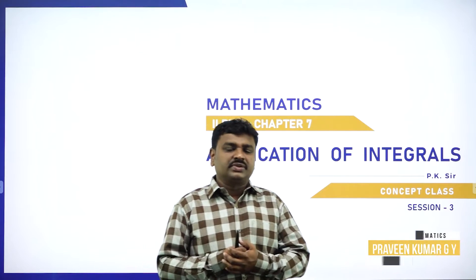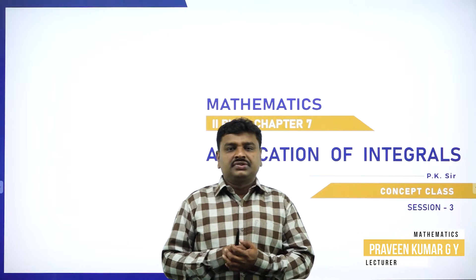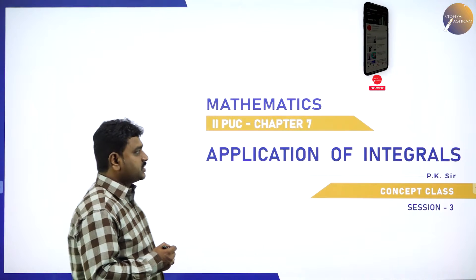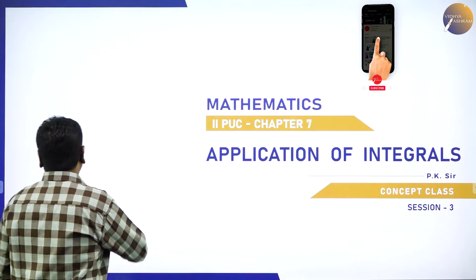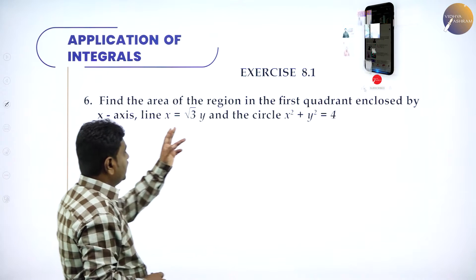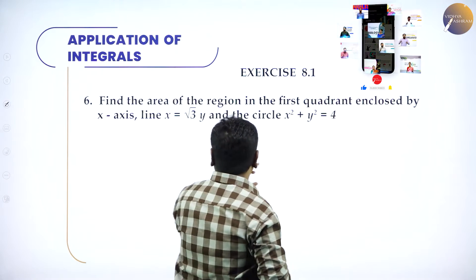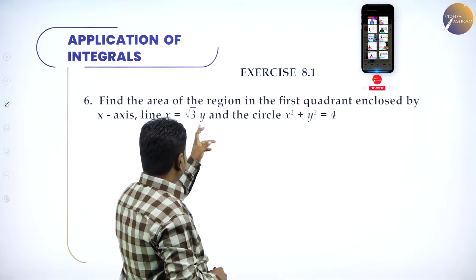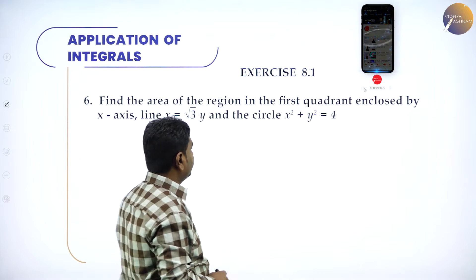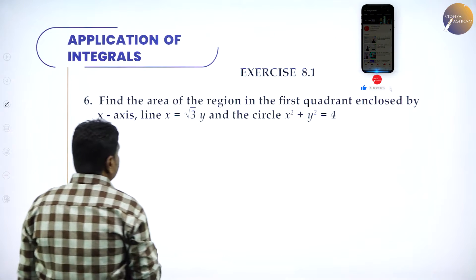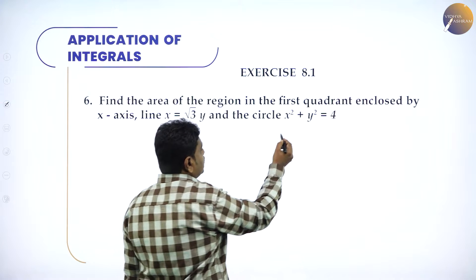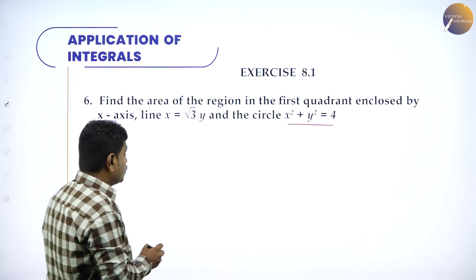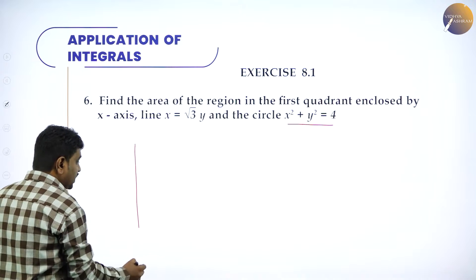Welcome to the session, dear students. Today we will go ahead with the problems of application of integrals, exercise 8.1. The first problem: find the area of the region in the first quadrant enclosed by the x-axis, the line x = √3·y, and the circle x² + y² = 4.